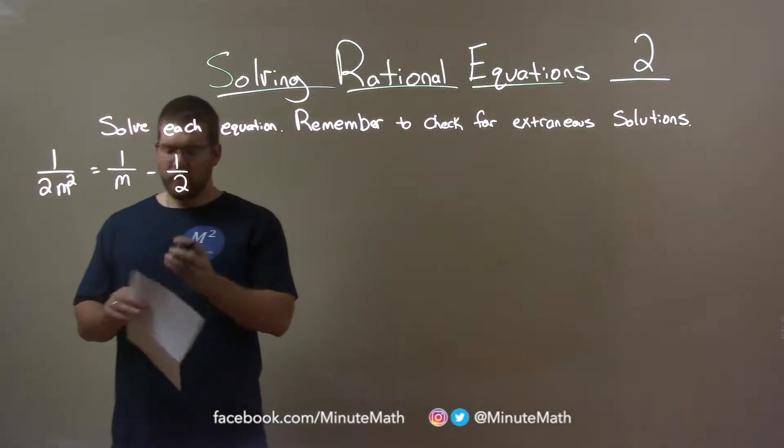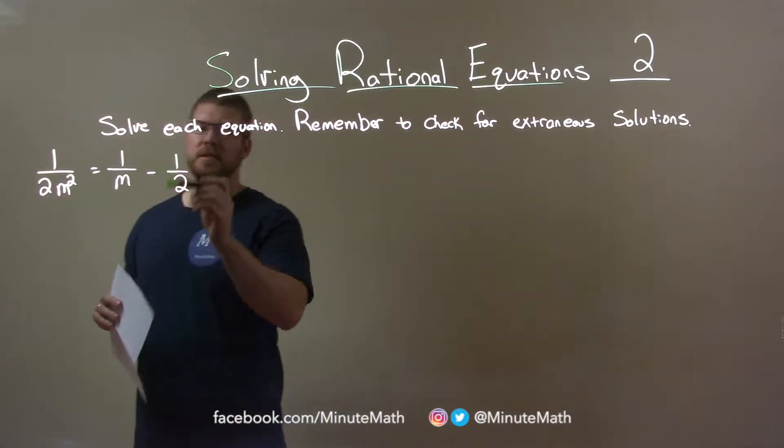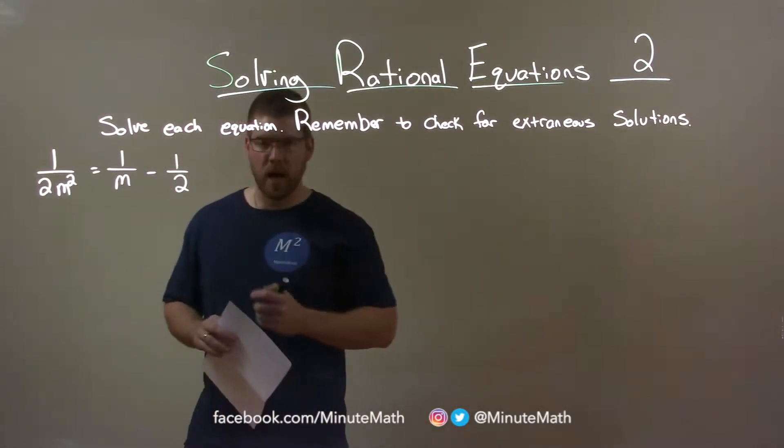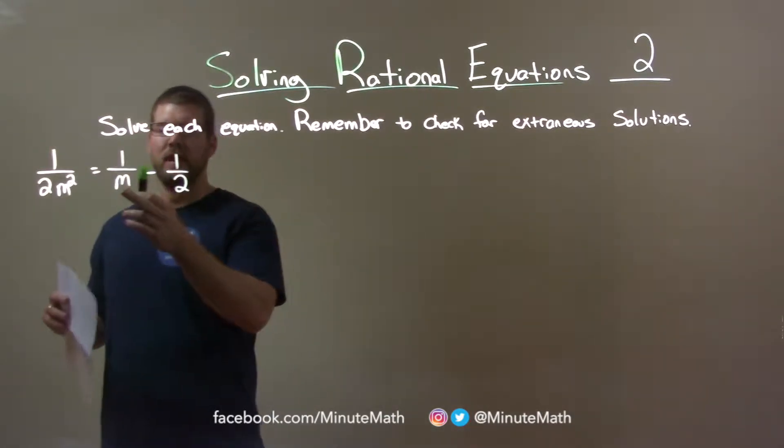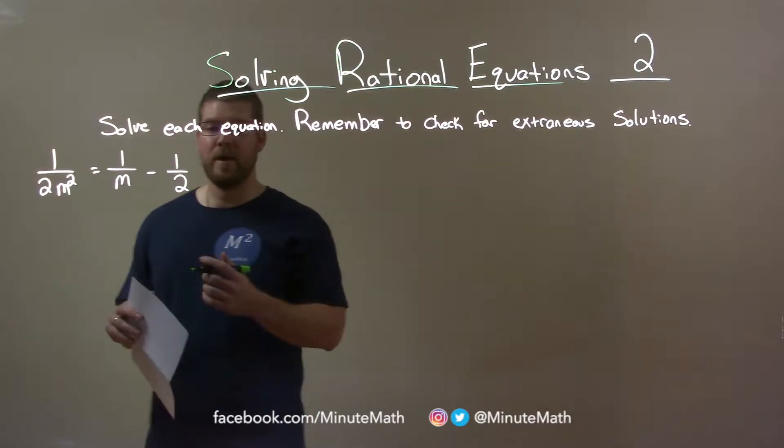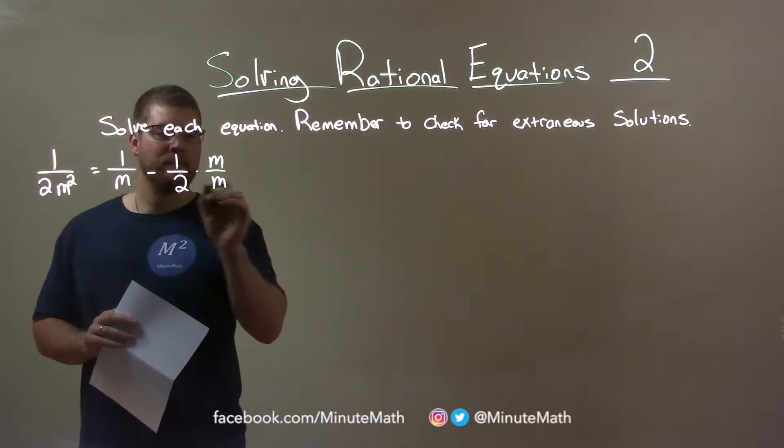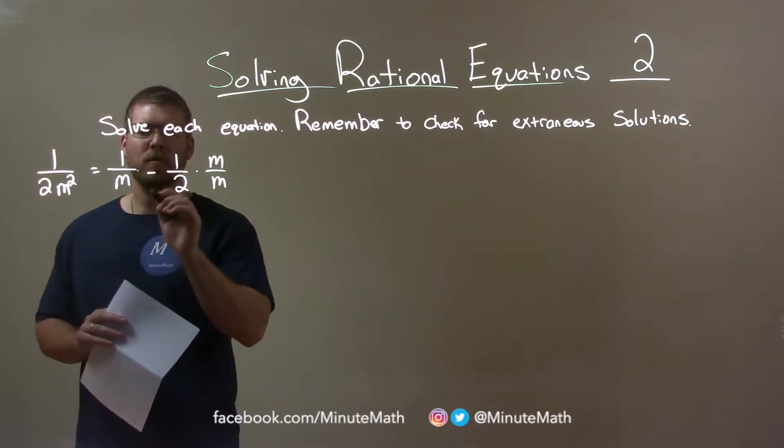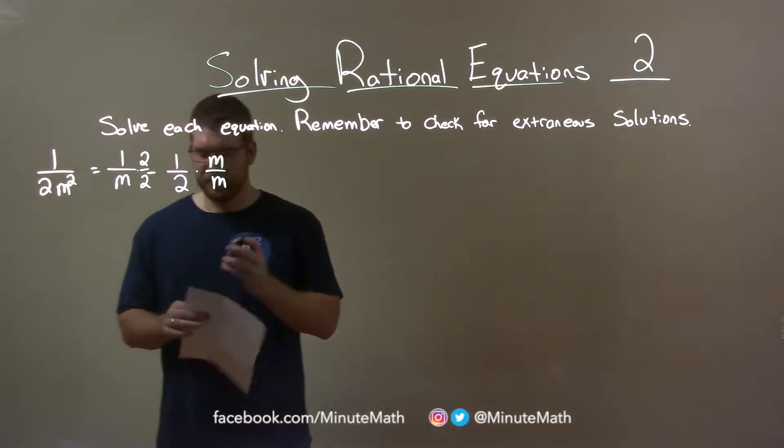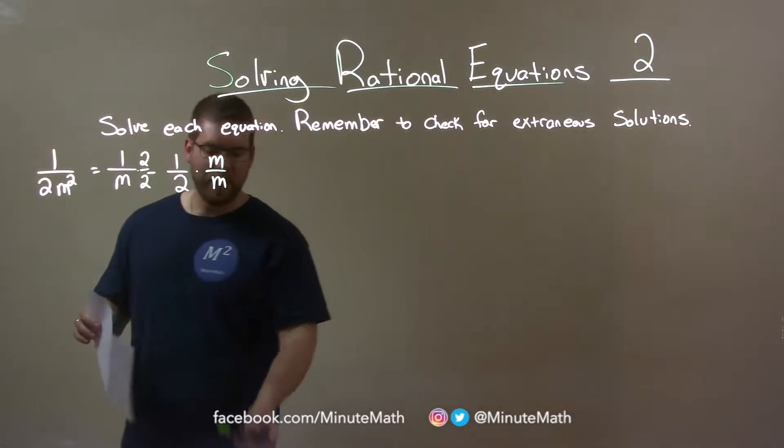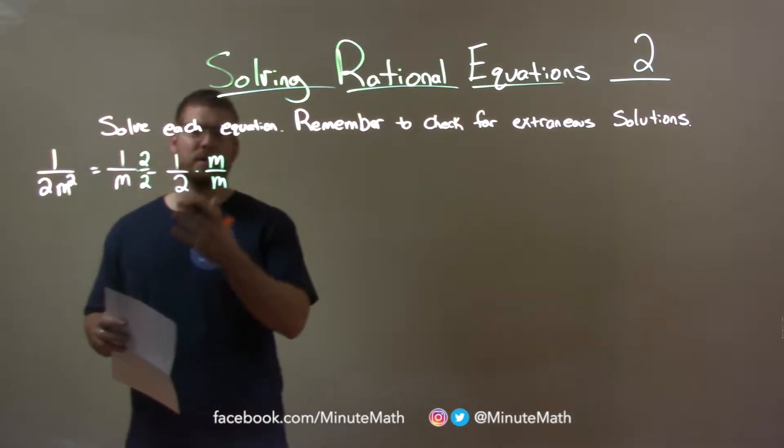One thing we can do is we want to add these fractions together but they don't have the same denominator. So we want to make a like base here. What I'm going to do is make both bases together 2m. So 1 half gets multiplied by m over m to make 2m that base and 1 over m gets multiplied by 2 over 2. What that does is give us a base of 2m for both of them, allowing us to combine it.